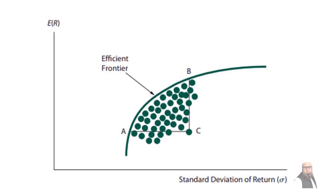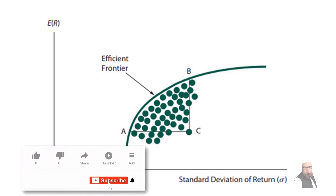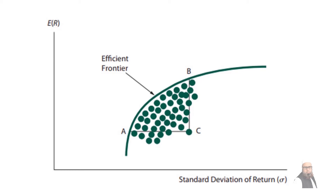Portfolios on the efficient frontier have a better risk-return trade-off compared to those below it. For example, comparing portfolio A and C: portfolio A is efficient because both have the same level of return but risk is lower for portfolio A. Comparing portfolio B and C: portfolio B is efficient because both have the same level of risk but the return on portfolio B is higher. Portfolios A and B are both efficient; selection depends on the investor's attitude toward risk. If an investor wants to minimize risk, they invest in portfolio A; if they want higher returns and can take on more risk, they invest in portfolio B.